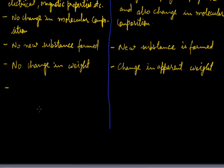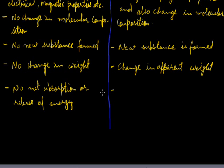In physical change, there is no net absorption or release of energy. A chemical change is accompanied by absorption or release of energy.